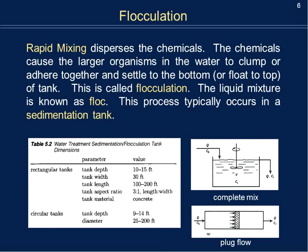Let's start with flocculation. The phase right before is rapid mixing, whose purpose is to disperse chemicals evenly throughout the tank. In a circular tank, chemicals are dispersed by a center panel; in plug flow, the flow moves from one direction to the other. As you move toward flocculation, the chemicals collide with organic materials and begin to clump together. Some settle at the bottom, and grease or fat mixtures may float to the top.